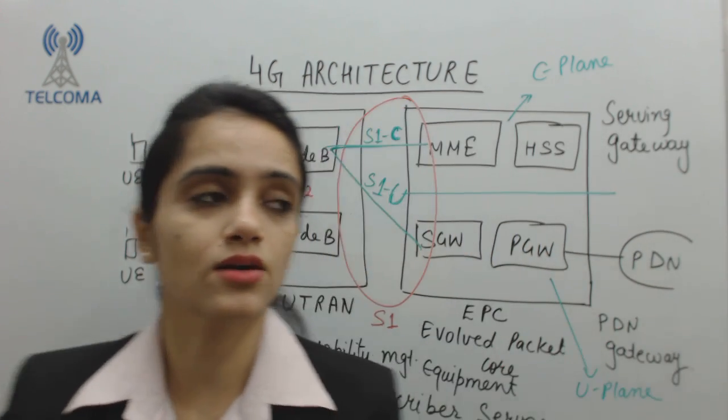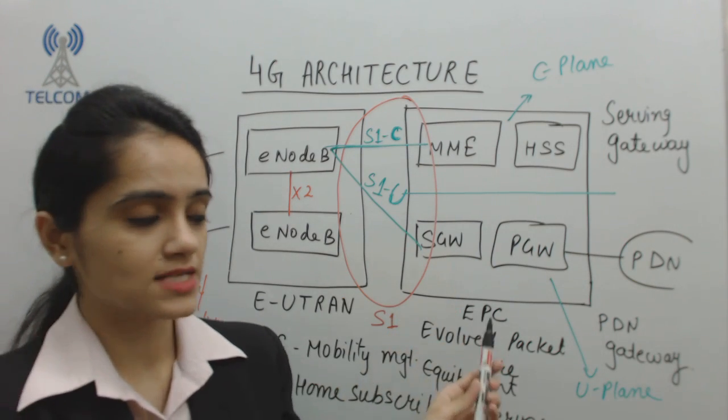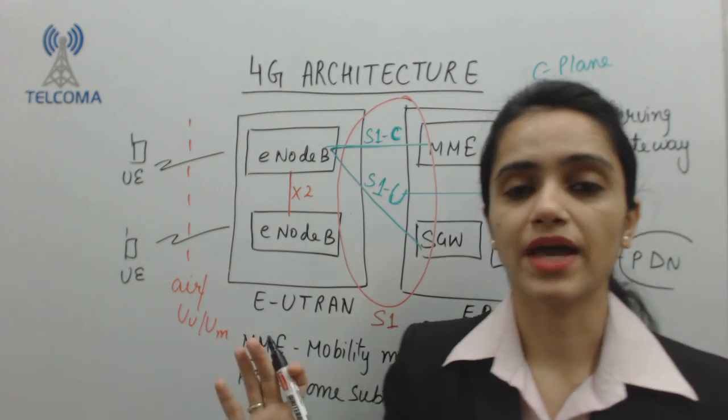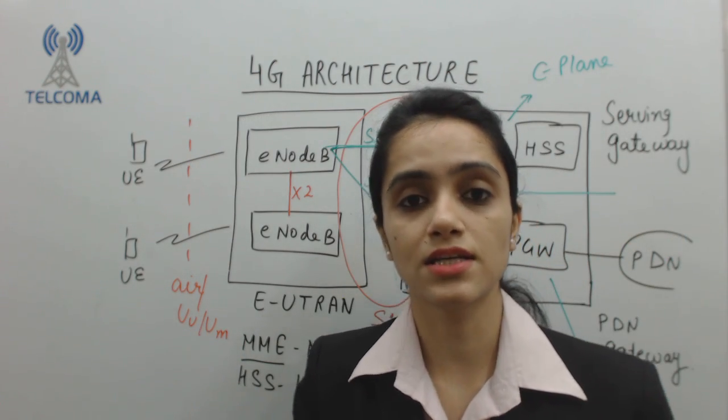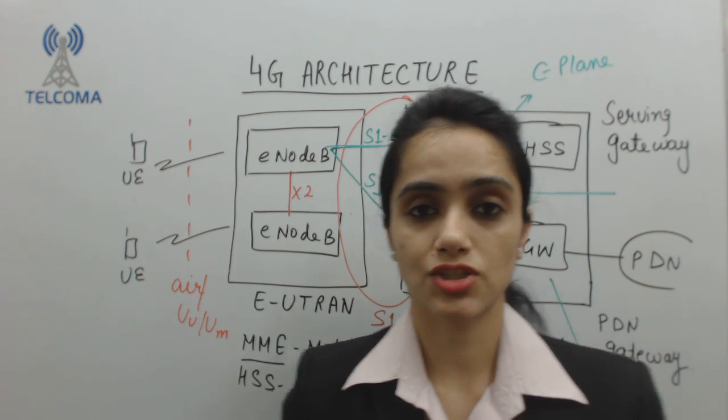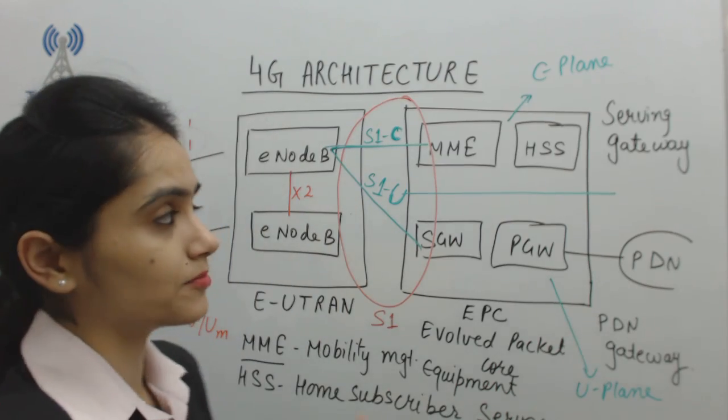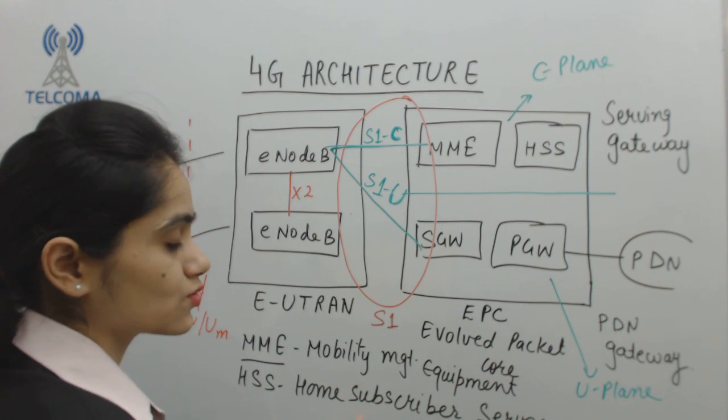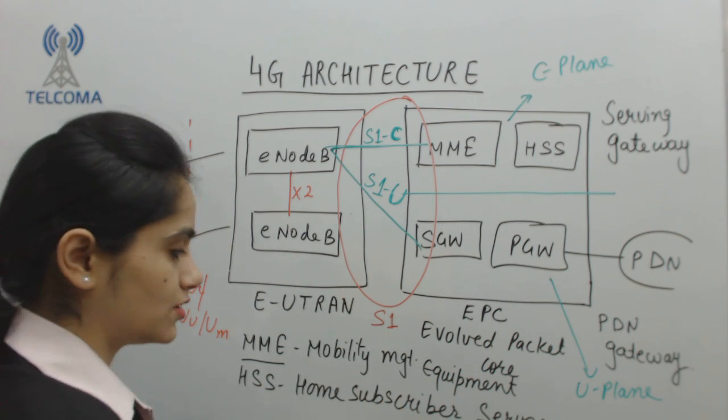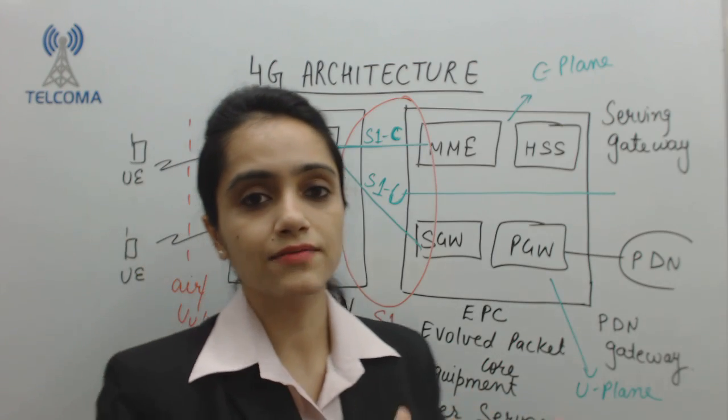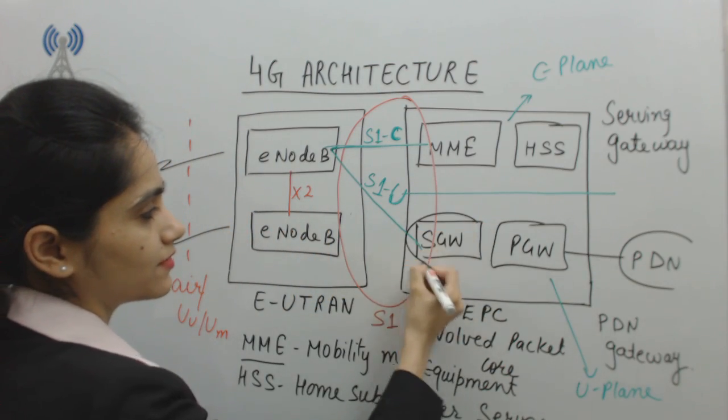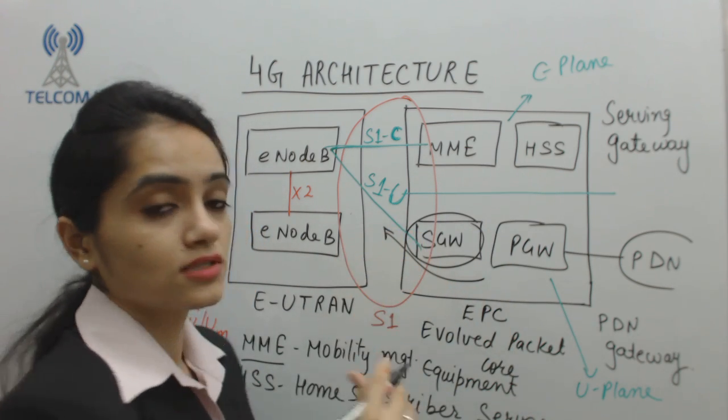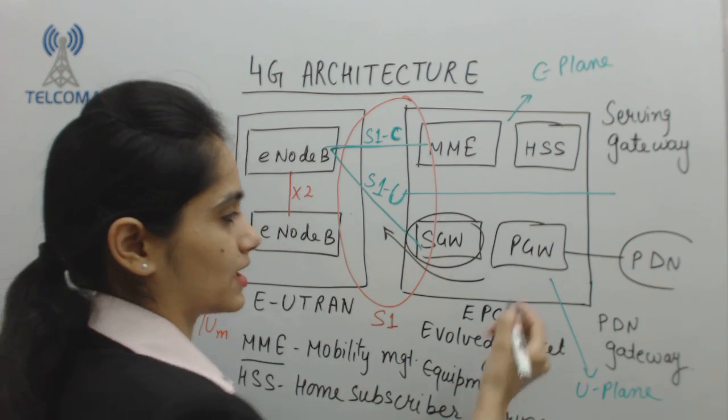MME is Mobility Management Equipment. This entity deals with the mobility of the user as well as authentication. It performs the function of VLR and authentication center. Home Subscriber Server is a permanent database which stores each and every information related to users. Serving Gateway functions similar to SGSN in 3G, like forwarding of packets or switching and processing of packets.